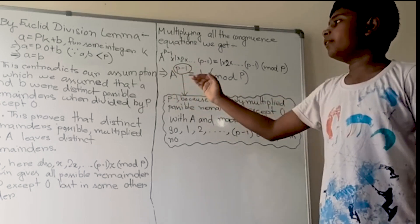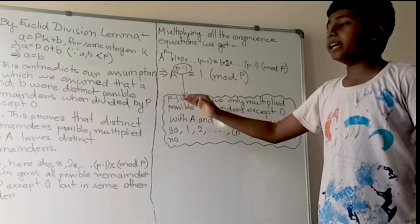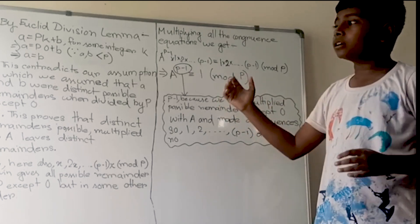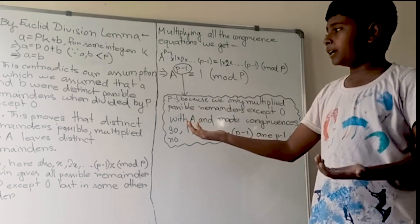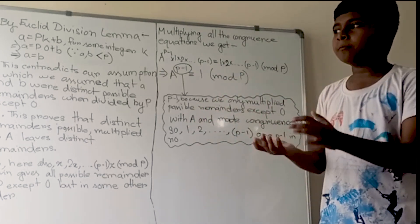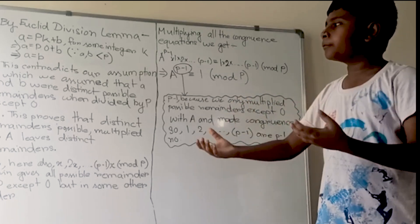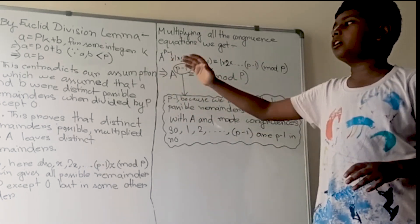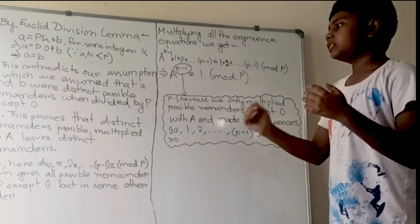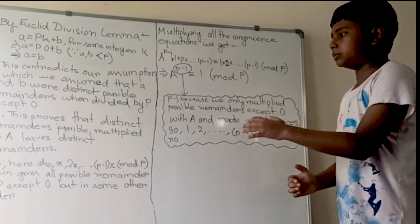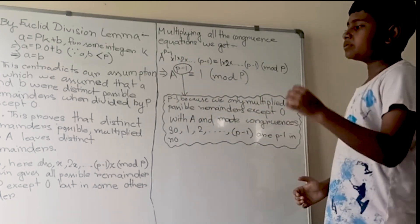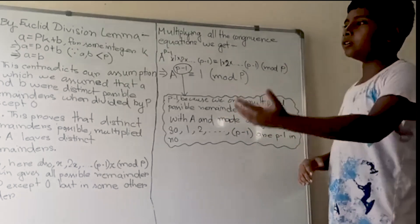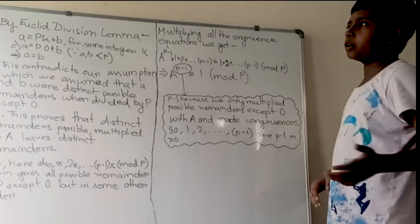But this contradicts our assumption that a and b were distinct possible remainders when divided by p, except zero. We assumed a and b were different, but we derived a equals b — so the contradiction is complete.